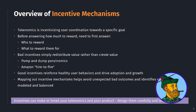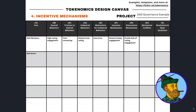Good incentives, on the other hand, reinforce healthy, sustainable user behaviors and drive adoption and growth. Good incentives make a good product even better, align behaviors, and contribute to creating more value. Mapping out your incentive mechanisms helps avoid unexpected bad outcomes like in Amazon's case, and identifies what you need to model and balance in your tokenomics. This is vital because incentives can make or break your entire tokenomics and your entire product. You need to design them carefully and test them, and the incentive mechanisms worksheet helps us do just that.